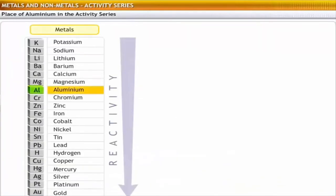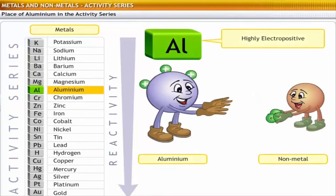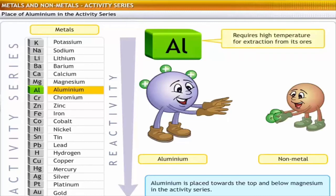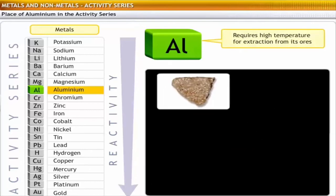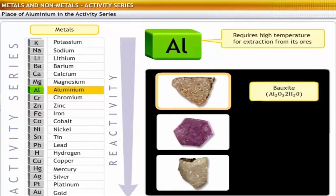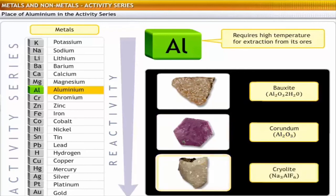Let's now take up aluminium, a well-known metal in the activity series, and analyze its properties and method of extraction. Aluminium is a highly electropositive element and so forms positive ions. Therefore, it is placed towards the top, below magnesium, in the activity series. It is not viable to use carbon reduction for extraction of aluminium because the metal needs to be heated to very high temperatures. Therefore, aluminium is extracted from its ores using electrolysis. The important ores of aluminium are bauxite (Al2O3·2H2O), corundum (Al2O3), and cryolite (Na3AlF6).